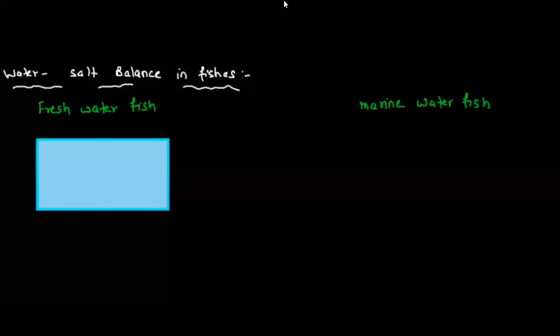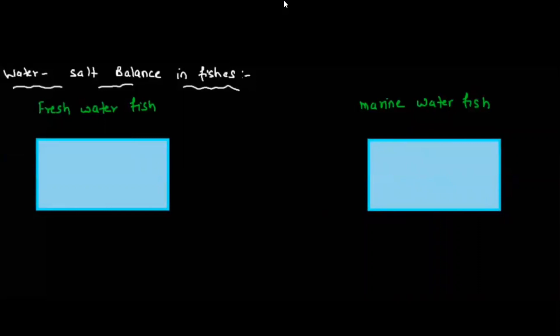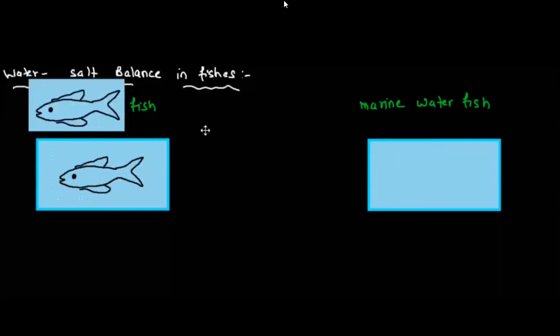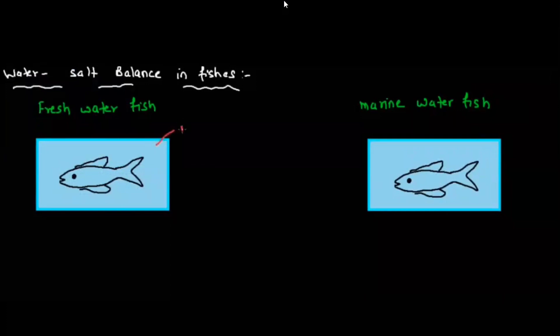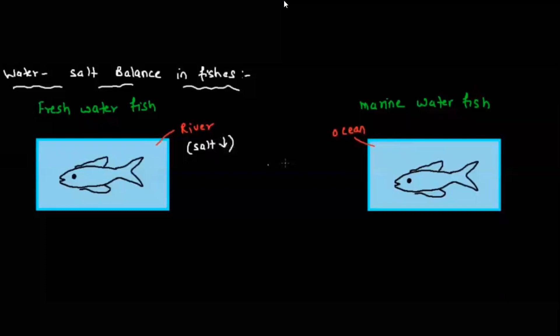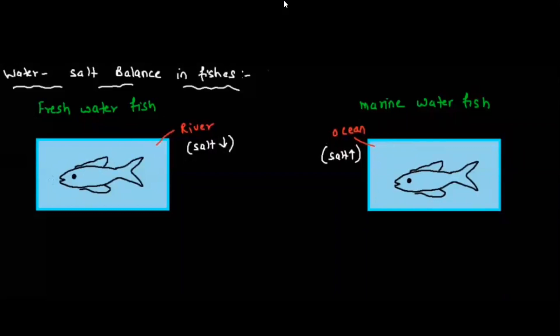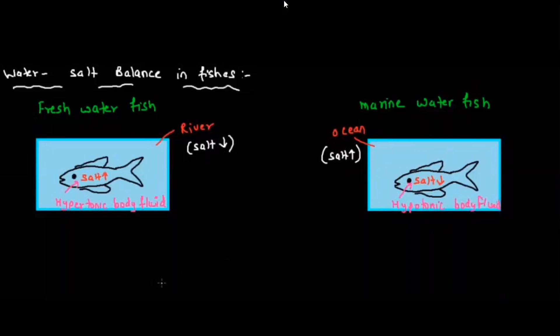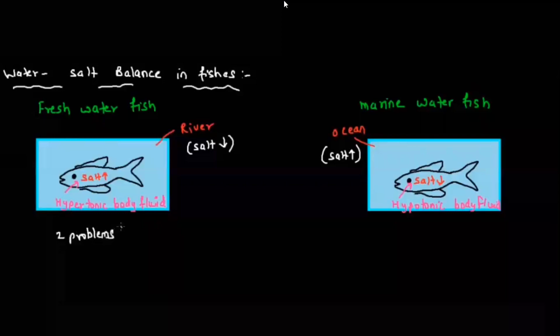The salt concentration in the body of the freshwater fish is very high compared to the river water. In a marine fish, the concentration of salt in the ocean water is very high compared to the concentration inside the fish body. So the freshwater fish body is hypertonic compared to the surrounding water, while the marine fish body is hypotonic compared to the surrounding water.